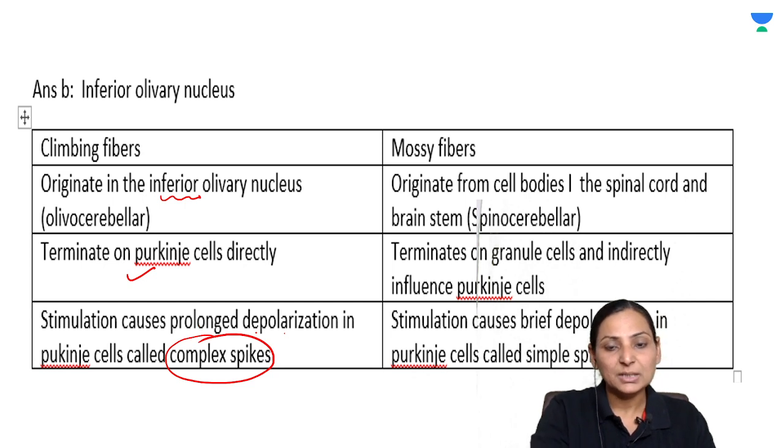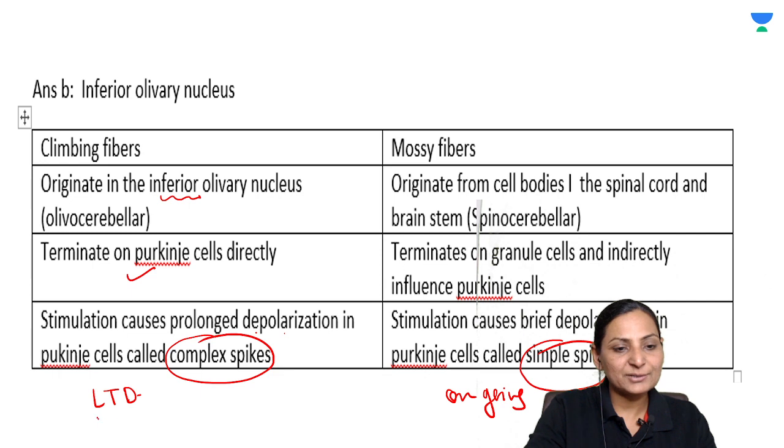Whereas the mossy fibers originate from the cell bodies in the spinal cord and brain stem. The fibers like spinocerebellar terminate on the granule cells and indirectly influence the Purkinje cell. They cause a brief depolarization which is called a simple spike. The simple spike is responsible for the ongoing movement. But suppose if there is any disparity between the planned movement and the movement that is done, then this complex spike brings about long-term depression of these mossy fibers and this helps in correction of movements.